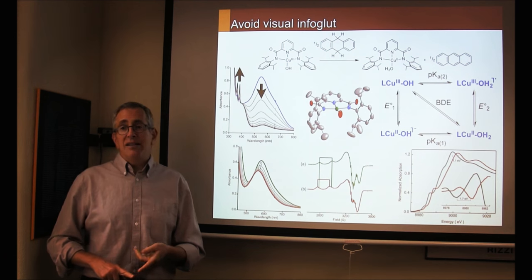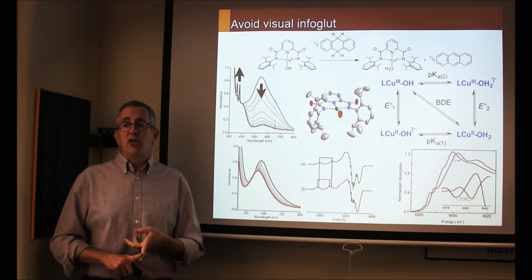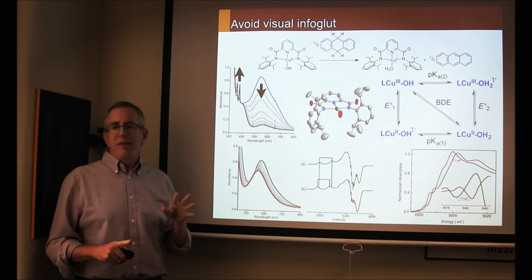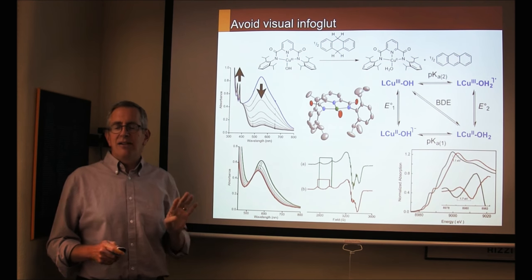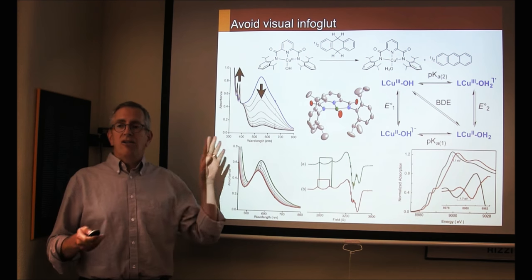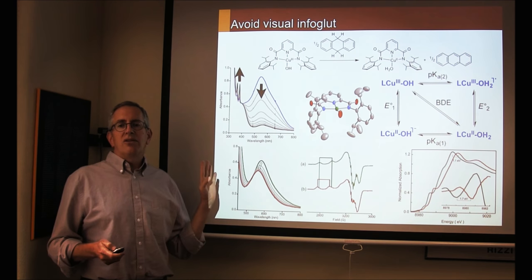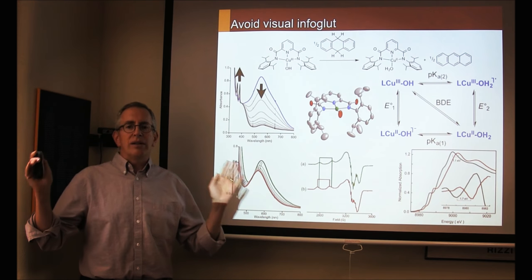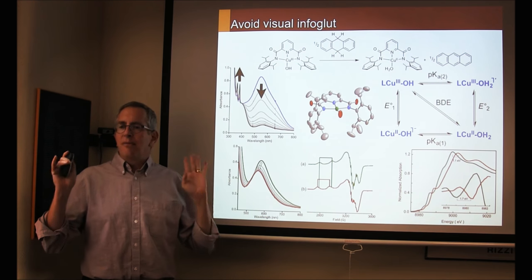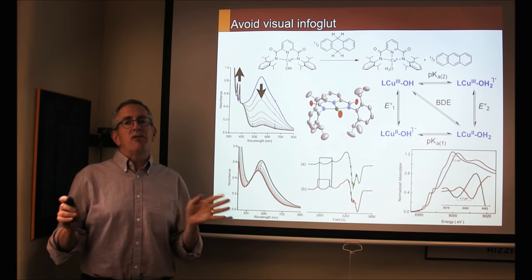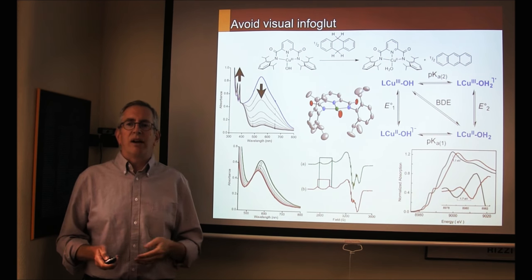A second piece of advice is avoid something that people call visual info blood. And here's an example, a whole bunch of information, lots and lots of things on this slide. It's incredibly cluttered, very distracting, and very hard to follow. So you want to avoid this sort of thing. One piece of information or maybe two on one slide is sufficient for people to understand, and again keeps people from being distracted from the main story of what you're trying to tell.